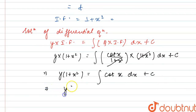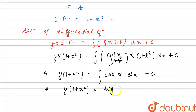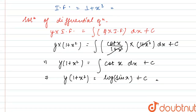Using the standard result of integration, we know that the integration of cot x is log of sin x. So the required general solution of the given differential equation is y into 1 plus x square is equals to log of sin x plus c.